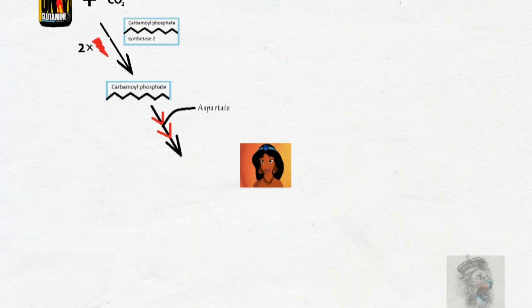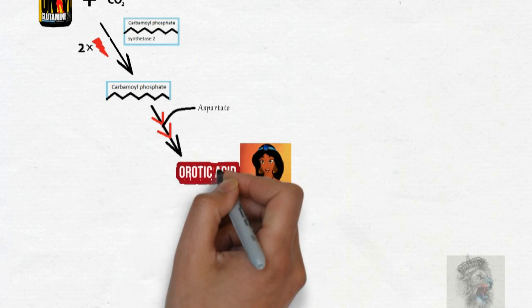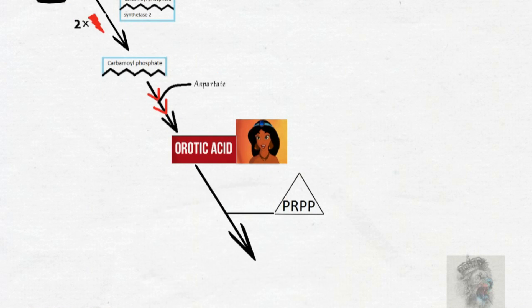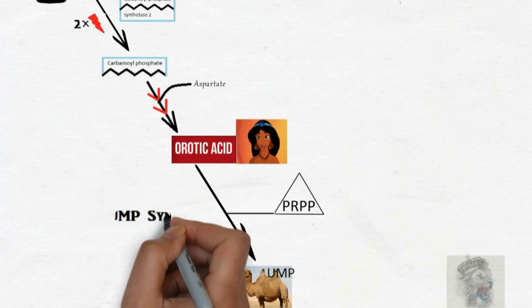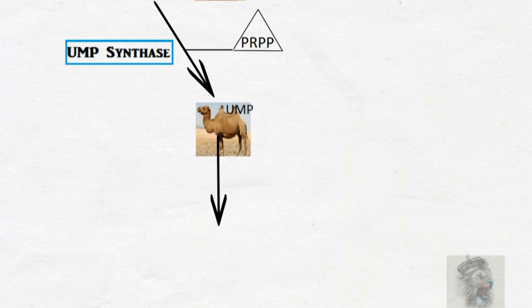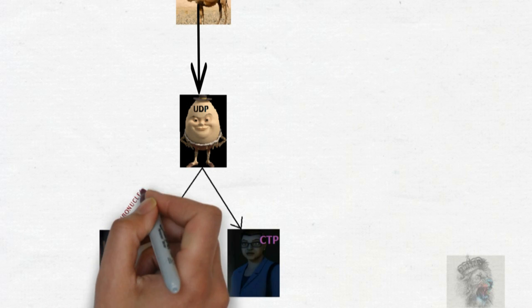...to meet her lover Jasmine, orotic acid. And then she was leaving the castle holding a flower which is PRPP and got onto the camel UMP using UMP synthase. And during this time, UDP saw this and summoned the UDP and CTP. But UDP doesn't know that CTP is an FBI agent, so UDP summoned dUDP...